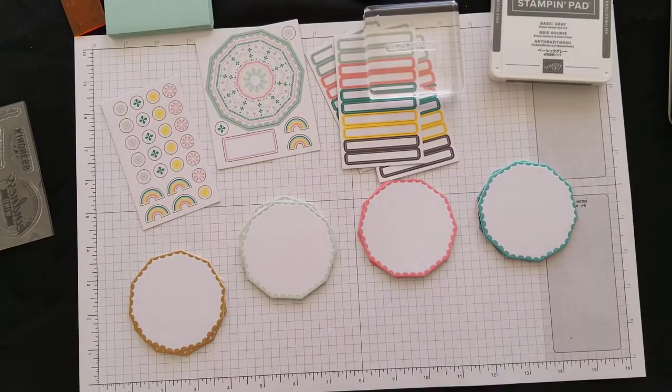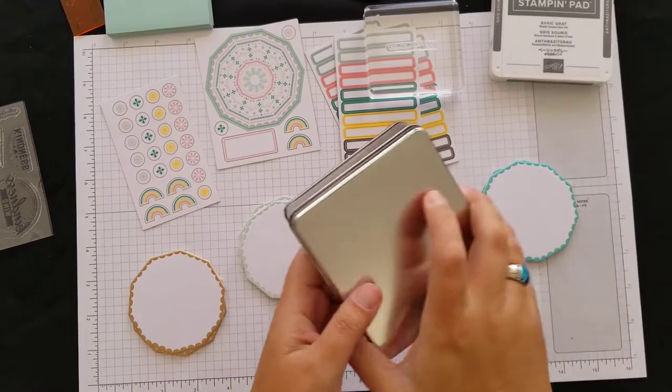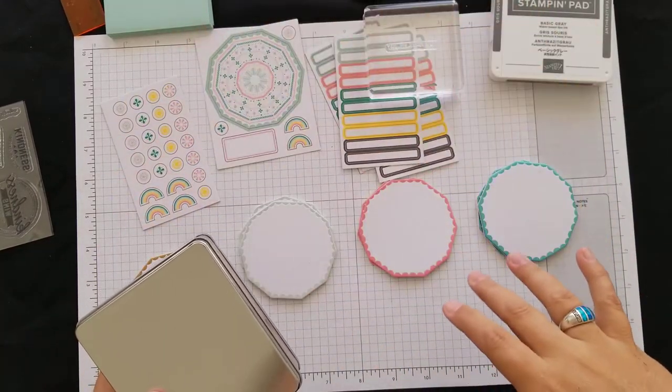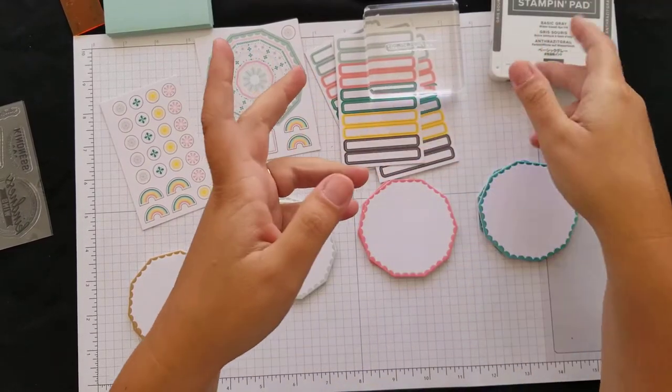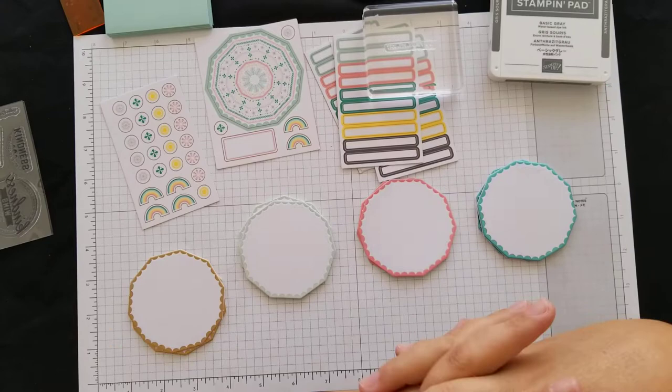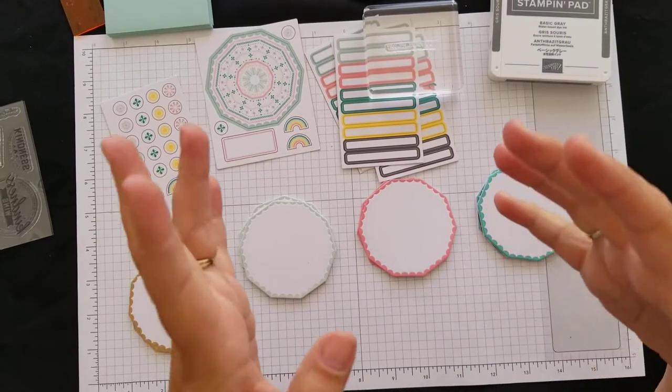So we have the tin, we have all the papers, it came with a Basic Gray Spot, the one inch cube, but of course I'm going to use the pad. And then it came with a block, but it is what it is right.